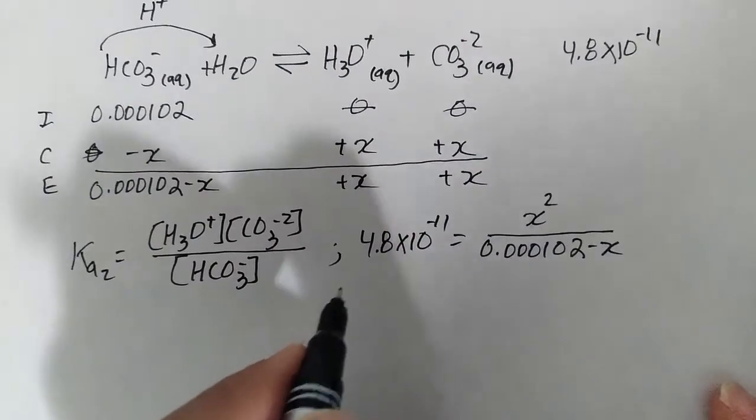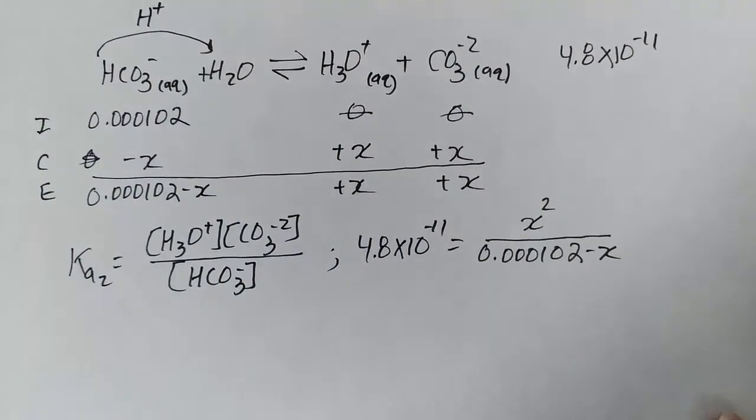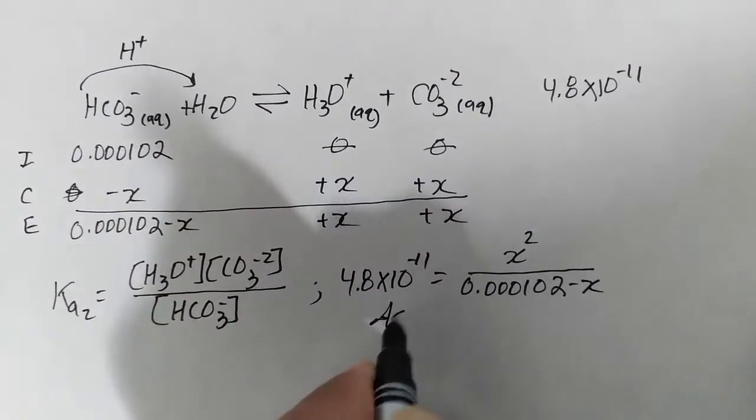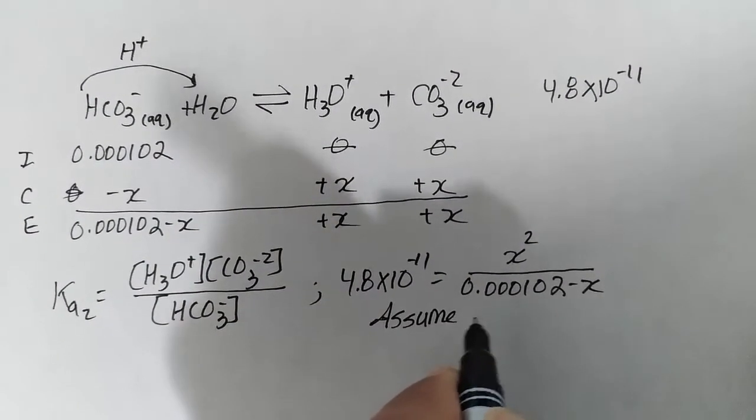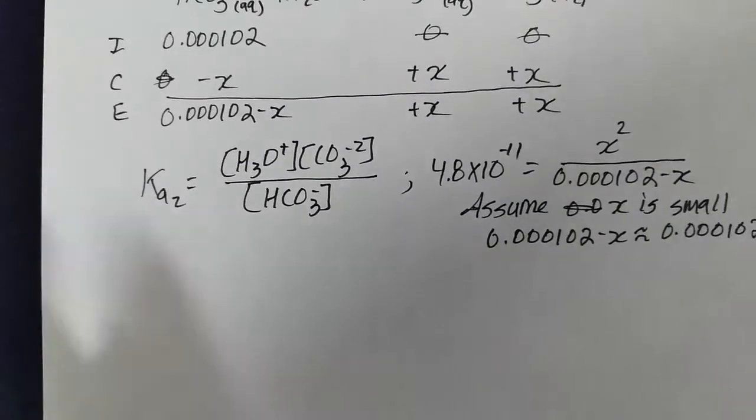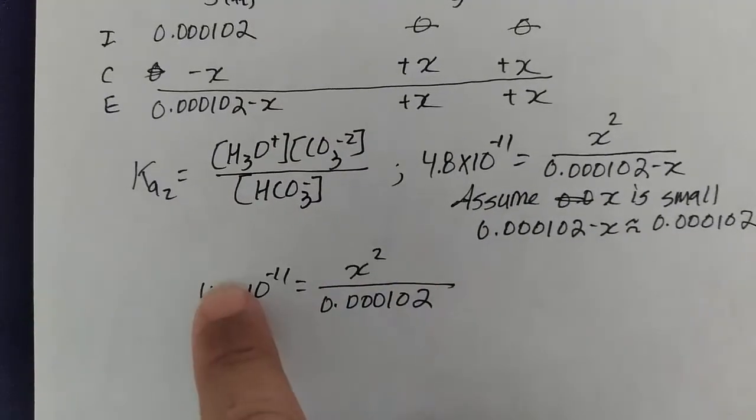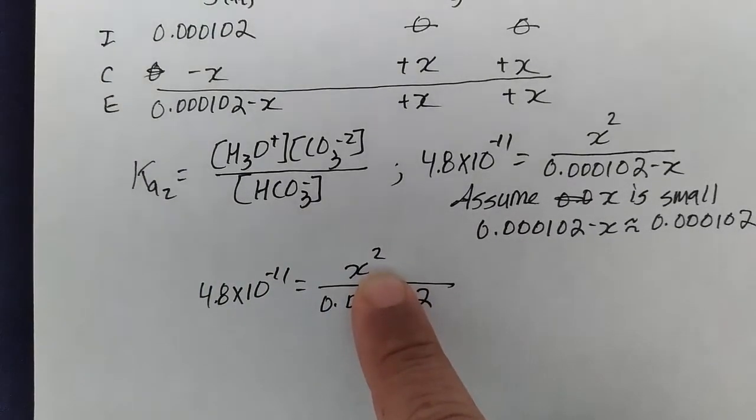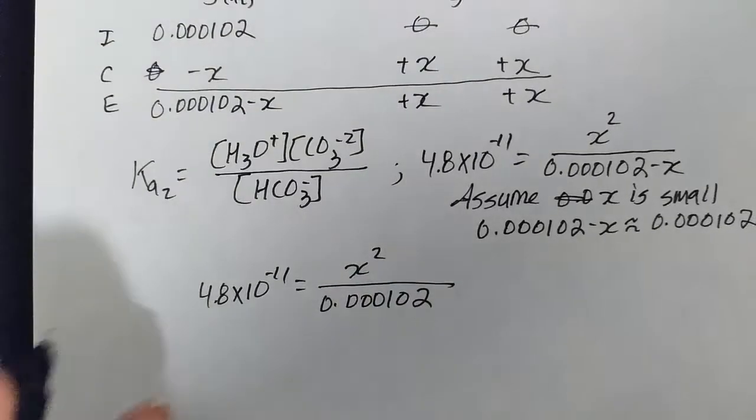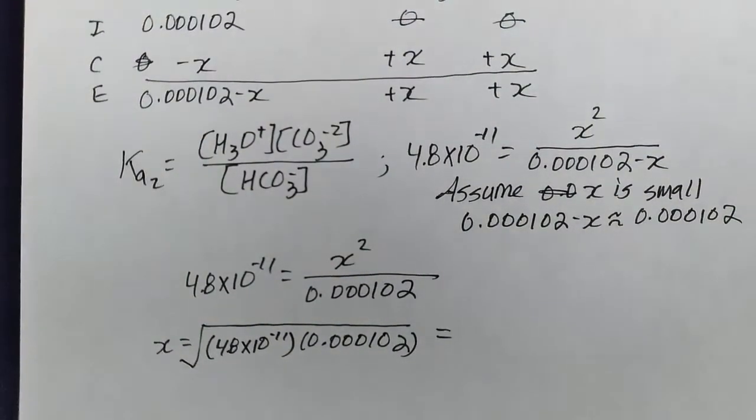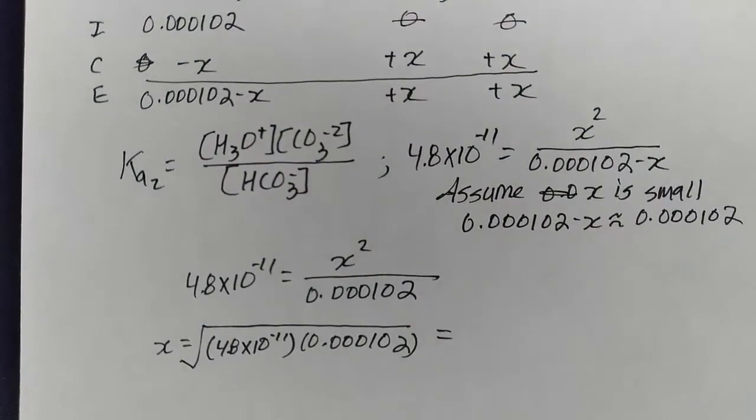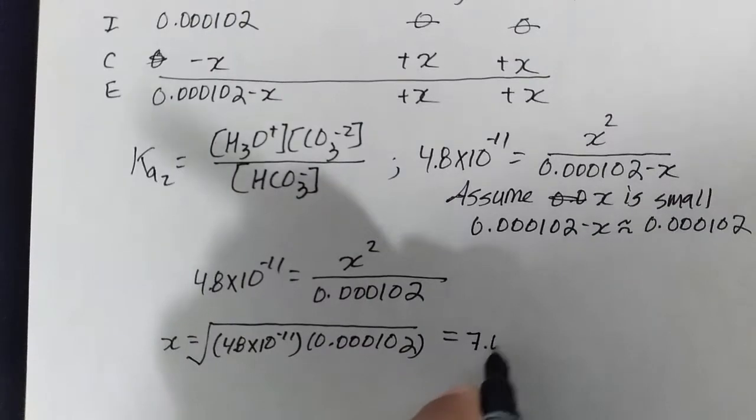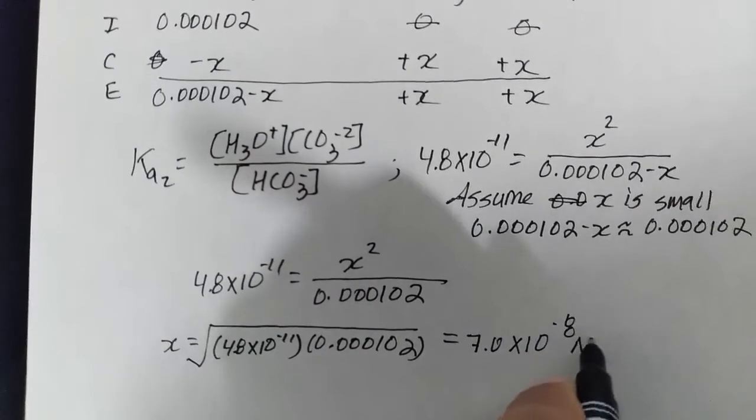Let's assume x is small, and 10^-11 is a very comfortable assumption to make that x will be small. So when we assume x is small, we'll multiply this by 0.000102 and that will equal x^2, and we'll square root that to isolate x. So solving this on my calculator, solving this on my calculator, getting a very small number here.